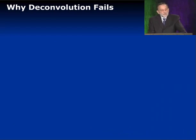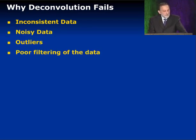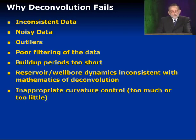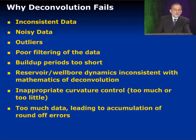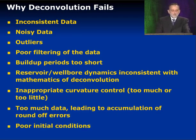There are many reasons why deconvolution fails: inconsistent data; noisy data caused by outliers or poor filtering; buildup periods that are too short; reservoir or wellbore dynamics that are inconsistent, since deconvolution works with linear differential equations; inappropriate curvature control — too much or too little gives the wrong answer; too many data points causing round-off errors that accumulate into millions of calculations; and unknown or incorrect initial conditions and initial pressures.